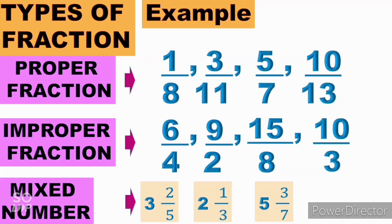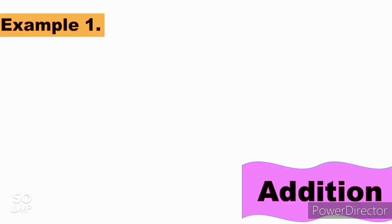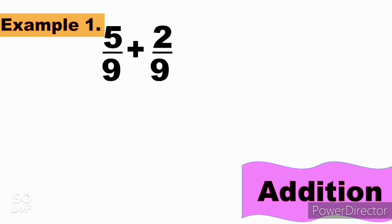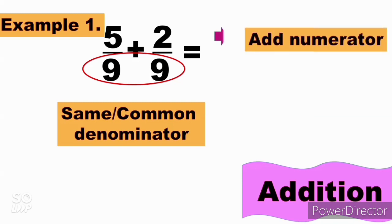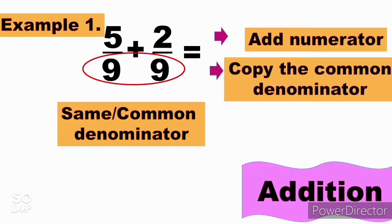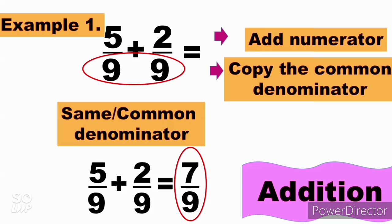Now let's proceed to the fundamental operations in fractions. The first one is addition. How do we add fractions? We have 5 over 9 plus 2 over 9. Notice that they have the same denominator, which is 9 — a common denominator. So the rule is: just add the numerators and copy the common denominator. 5 plus 2 is 7, and we copy the denominator 9. Therefore, the answer is 7 over 9.